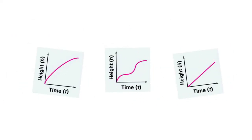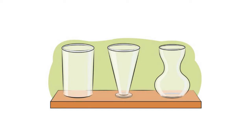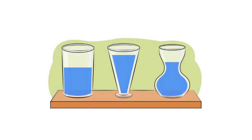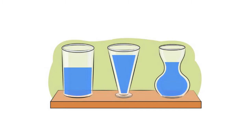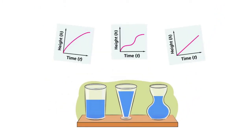Today's assignment is all about imagining what a pattern of change looks like on a graph. We start with three containers and your job is to imagine how the height of the water changes as it is filled up. Will the height leap up rapidly or rise slowly? Or maybe it will change at the same speed? As you look at the graphs, try to describe them with words first, like 'starts off slow, then speeds up,' then try to find the container that matches your description.